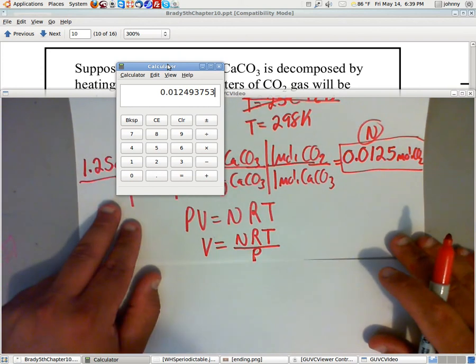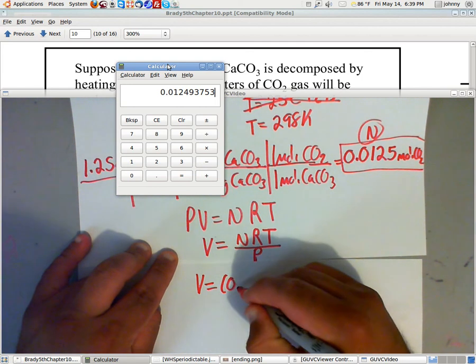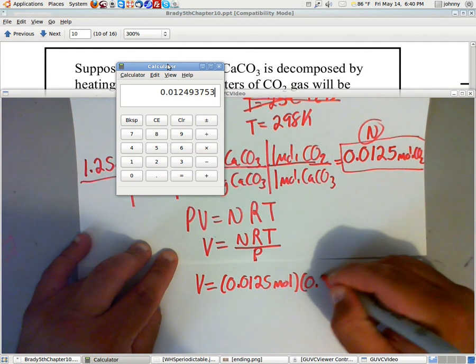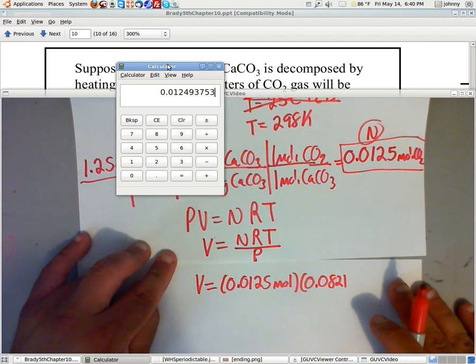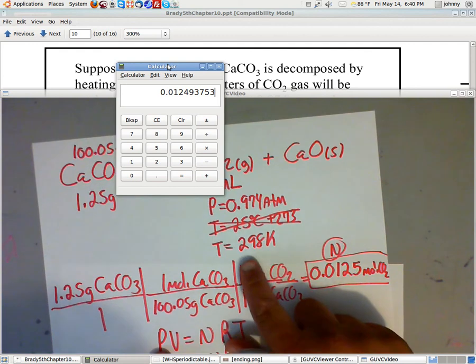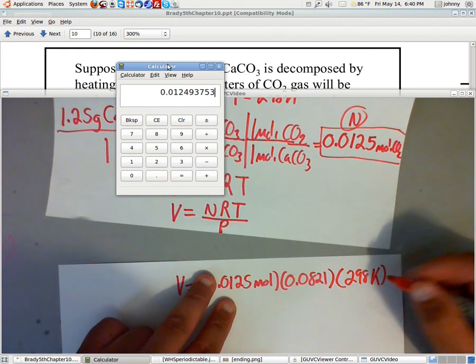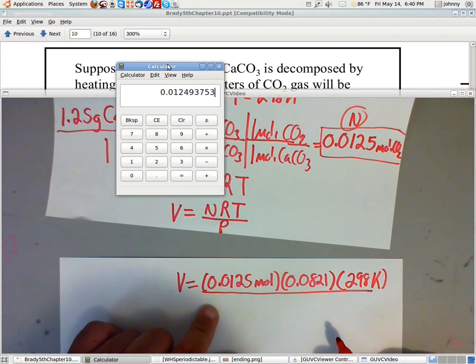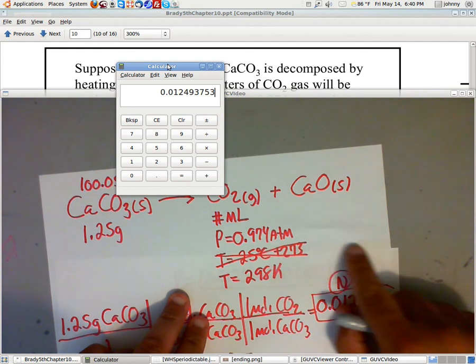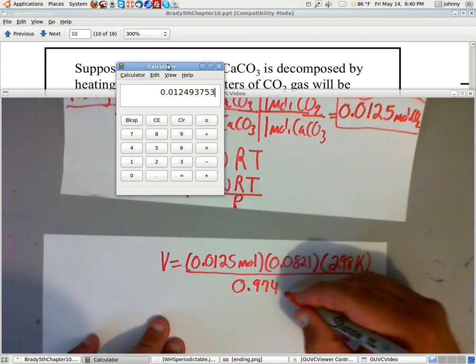Now, this would be volume equals, now my end value is right here. It is 0.0125 moles. My R value is 0.0821. I'm running out of room, so don't get mad, I'm gonna leave the units off. The temperature, notice is, we calculated it earlier, is 298. It's gonna go in here, 298 Kelvin, over my pressure, which my pressure, if you see here, it was given earlier in the problem, the 0.974 ATMs, I'll put that down here, 0.974 ATMs.